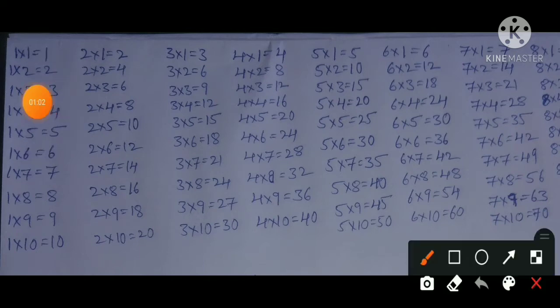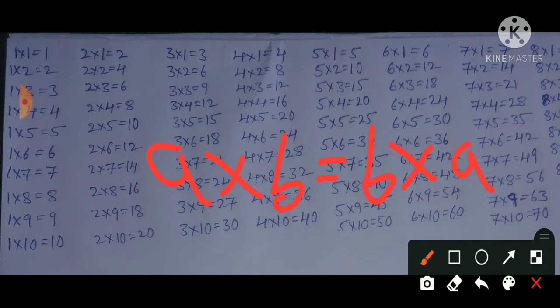In this method I am using a simple technique: we know that a × b = b × a. If we multiply two numbers like 2 × 1, the result is the same as 1 × 2. We are going to apply this property throughout this method.